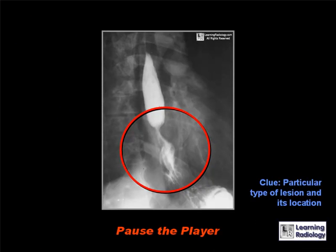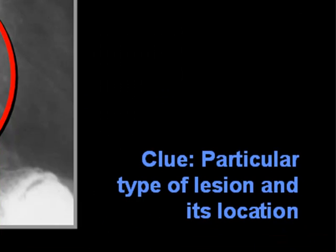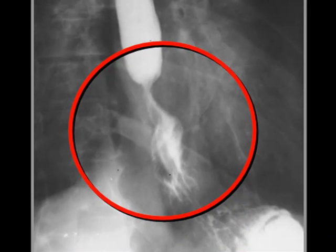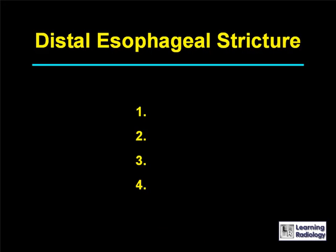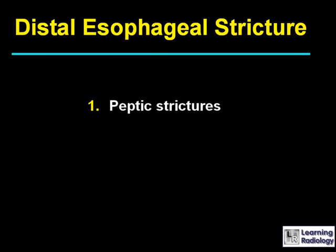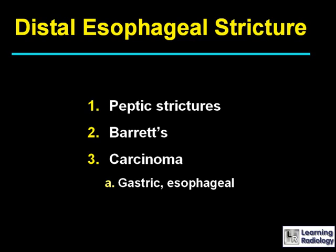The next differential is for a distal esophageal stricture. There are four causes: peptic or reflux esophagitis, Barrett's esophagus, carcinoma (either gastric extending into the distal esophagus or esophageal carcinoma), and achalasia.